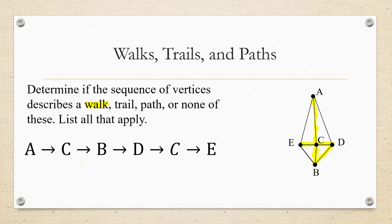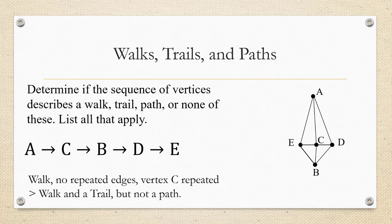So there we have to check for any repeated edges. Notice that I traversed each edge only once. So it's a trail as well. But is it a path? We visited vertex C twice, and that's not allowed in a path. So what we have is a walk with no repeated edges, but vertex C is repeated. So this is a walk and a trail, but not a path.